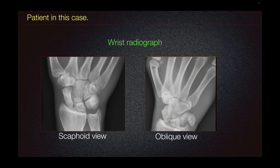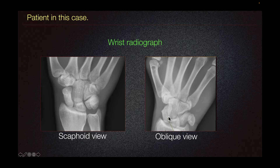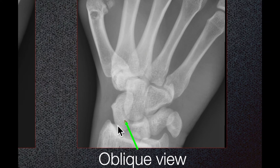The patient presented with this wrist radiograph. Here we can see an ulnar deviated PA radiograph of the scaphoid showing no displaced fracture. On the oblique view, we can see a subtle lucency traversing the proximal waist of the scaphoid, concerning for a non-displaced fracture.